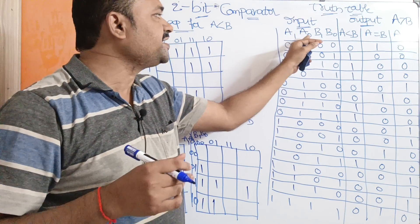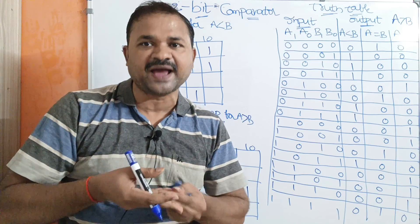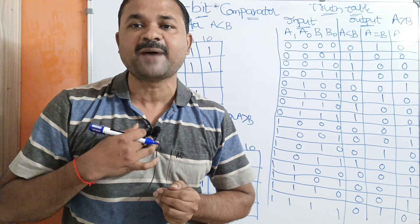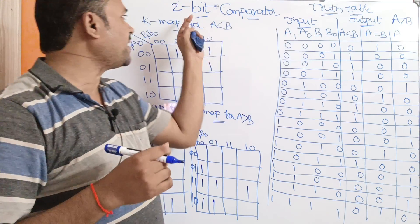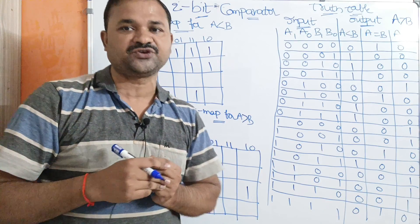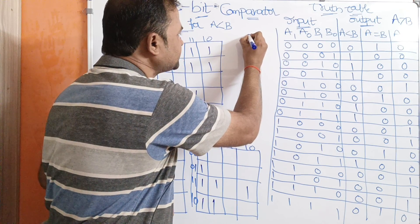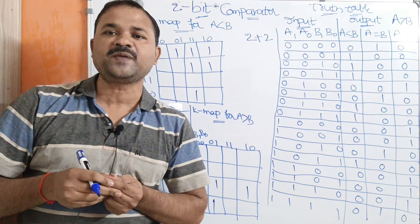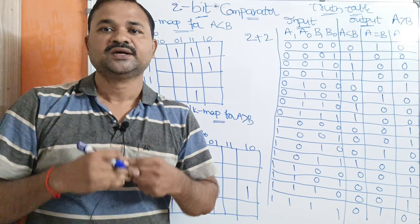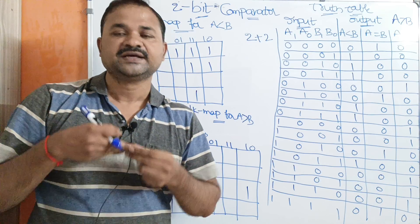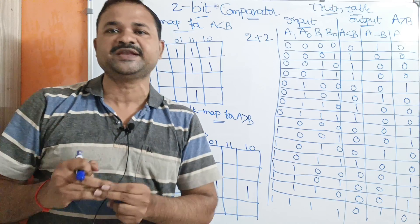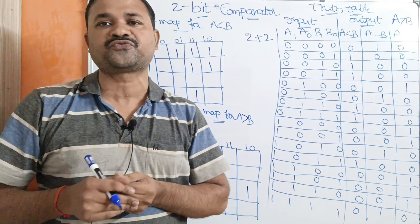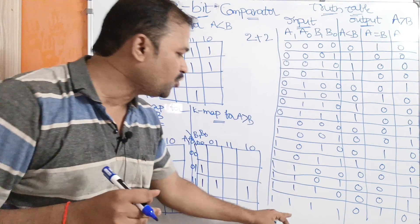Here A1 and A0 represent the first binary number, and B1, B0 represent the second binary number. So the size of each binary number is 2 bits, meaning we have two 2-bit numbers. So 2 plus 2 equals 4, and totally we will have 2 to the power 4, that is 16 combinations. That's why we have written the binary notation of 16 decimal numbers from 0 to 15.